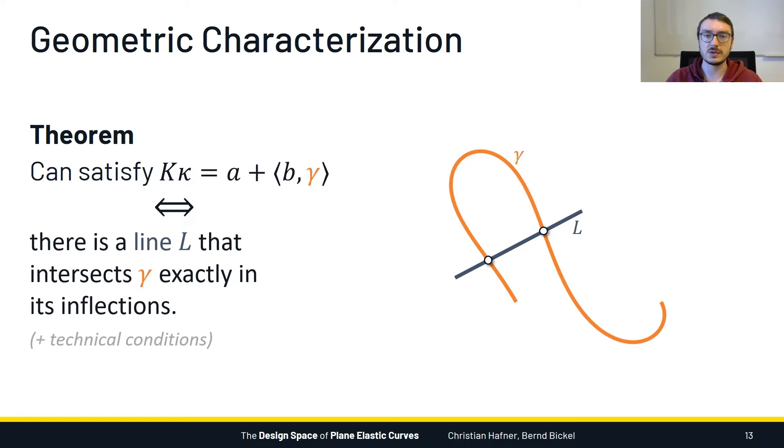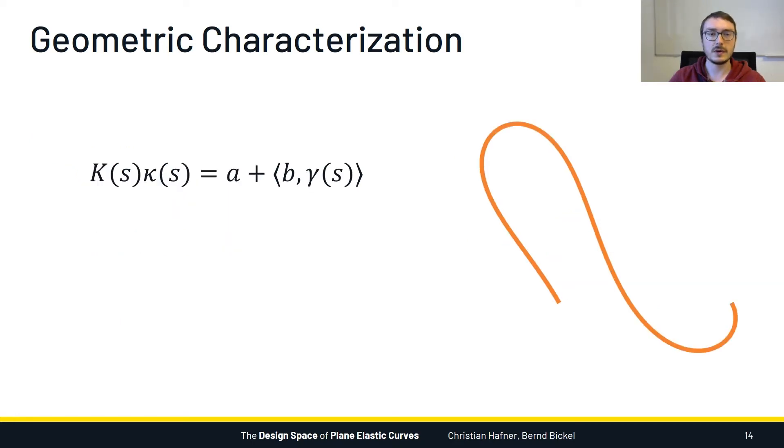Now let's see why this theorem holds. Here we have our moment equilibrium equation again and an example curve. Let's try to figure out whether we can determine the stiffness function and values for A and B in such a way that the equation is satisfied. First let's look at the left hand side of the equation. We know that no matter how we choose the stiffness, it has to be positive everywhere. This tells us that the left hand side will always have the same sign as the curvature.